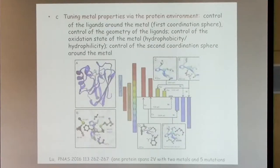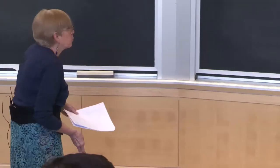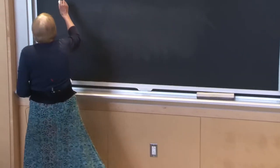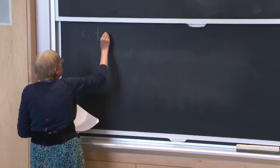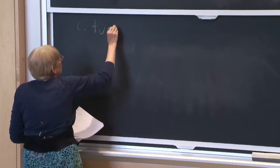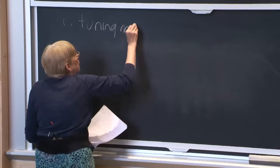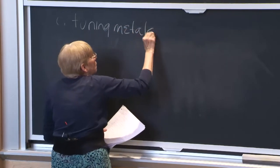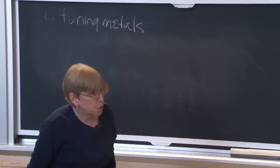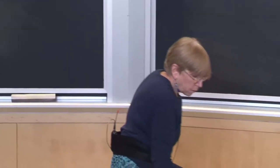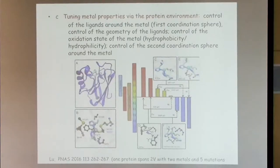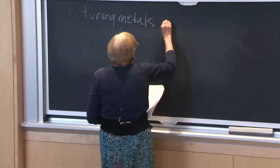There are a few more things I want to mention about metals in general. The third thing is tuning metals. The things that are going to tune the metals — and we'll see this when we look at iron specifically, but it's true of all metals — are the ligands: the first coordination sphere.